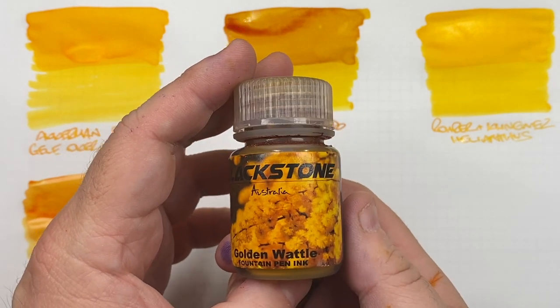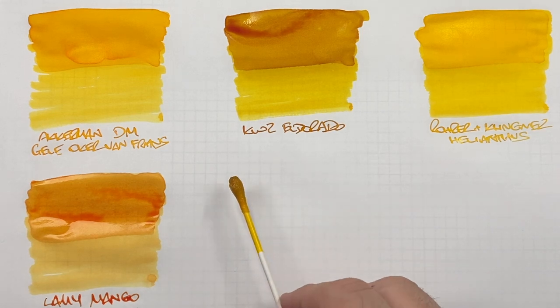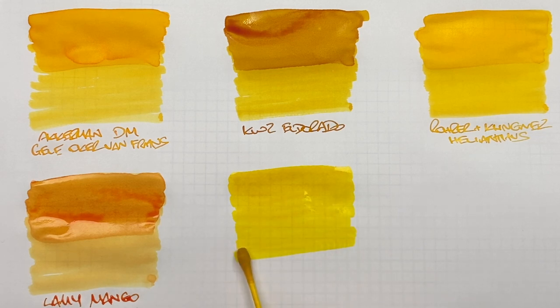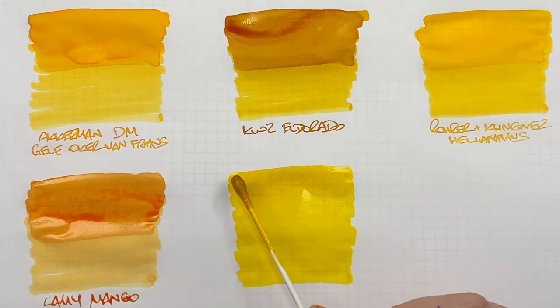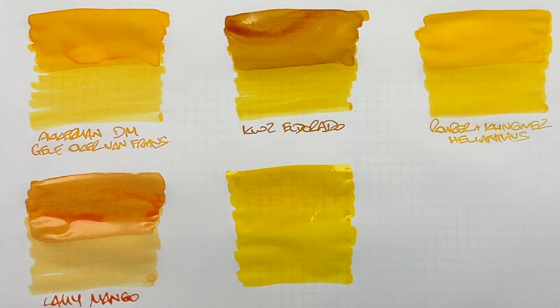And then the last ink here is a Blackstone ink called Golden Wattle. Now unfortunately Blackstone have now shut their doors and are no longer available so you cannot buy these inks. I want to say that most or if not all of the retailers that did stock Blackstone no longer have any ink remaining or certainly not the Golden Wattle from what I've seen. So we're doing an ink swatch here. Now again this is a nice bright yellow ink and I bought this on a trip to London.